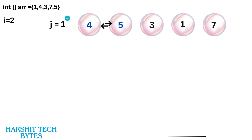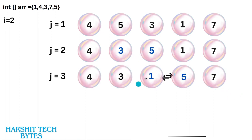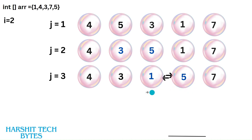Now when i becomes 2, the outer for loop is 2 and the inner for loop starts from 1 to n minus 2, because one pass is already done. We swap adjacent elements if they are in the wrong order. We also swap 5 and 1, and you can see in the second step one more element is placed at its correct position. So we subtract 1 from n again and don't need to compare the last index values.